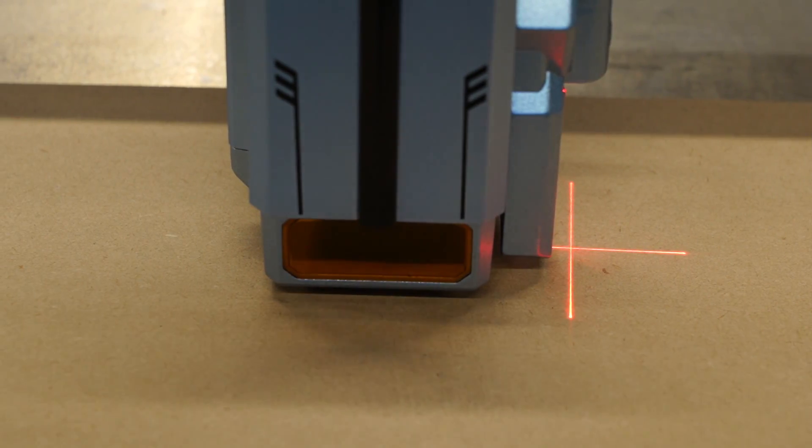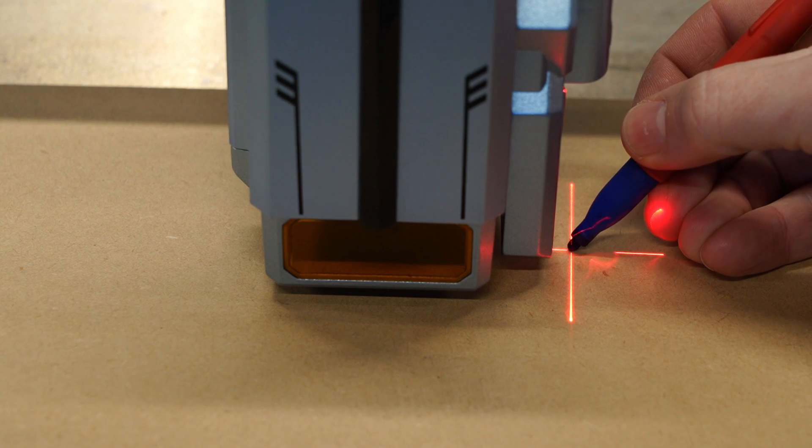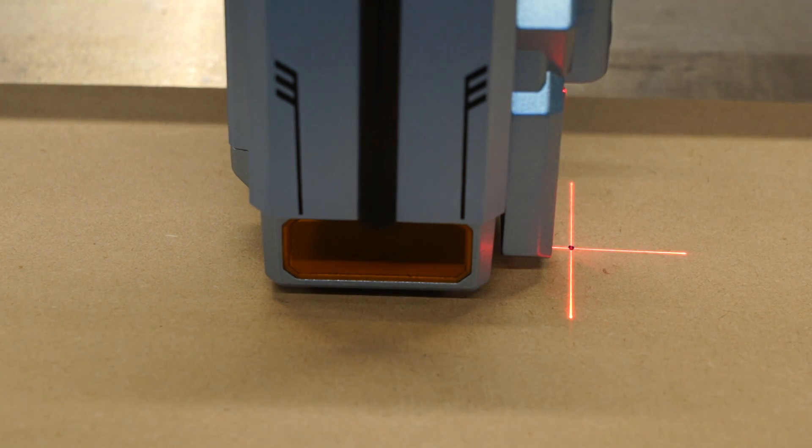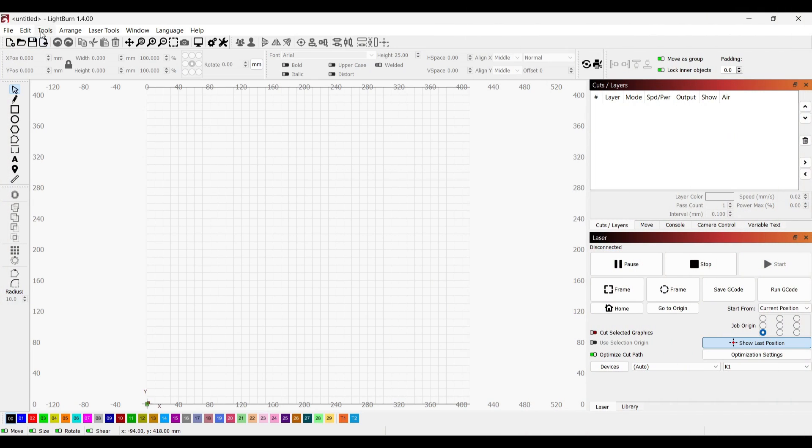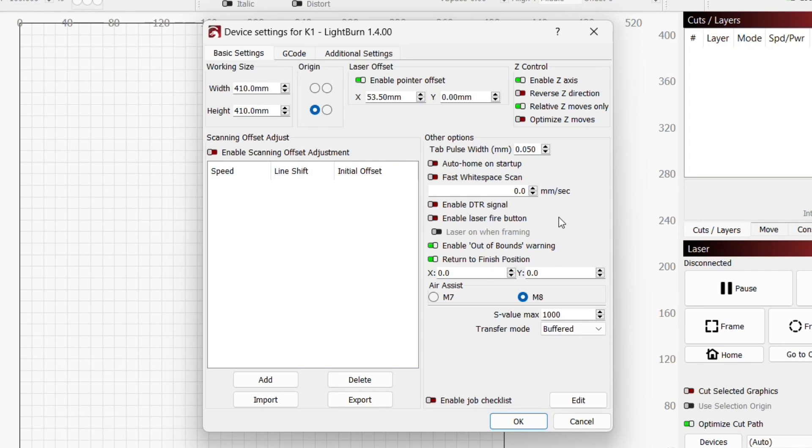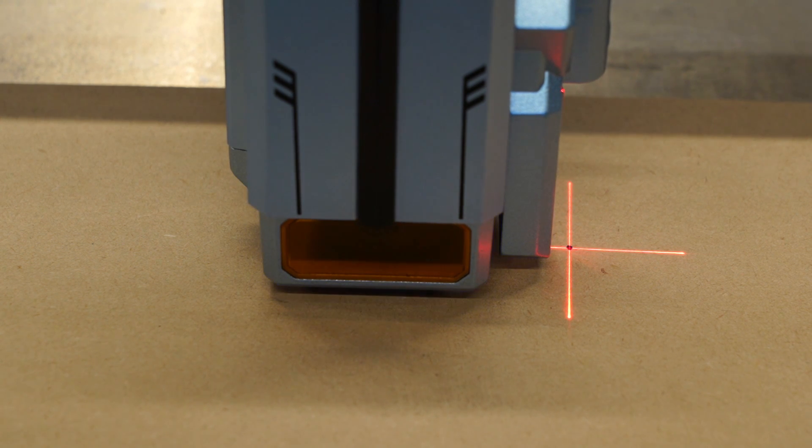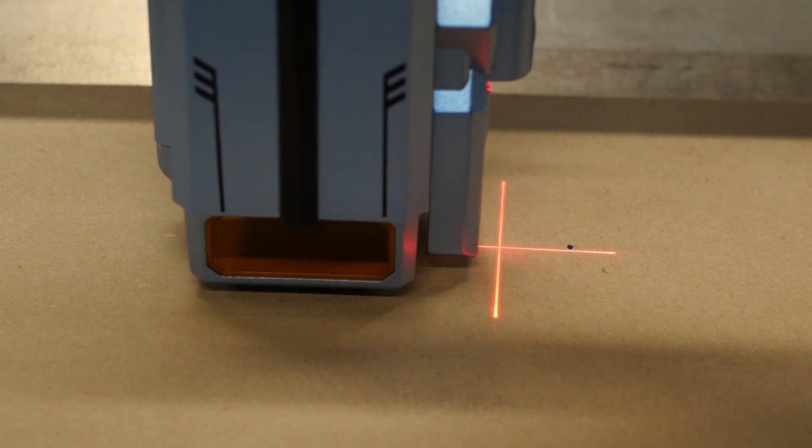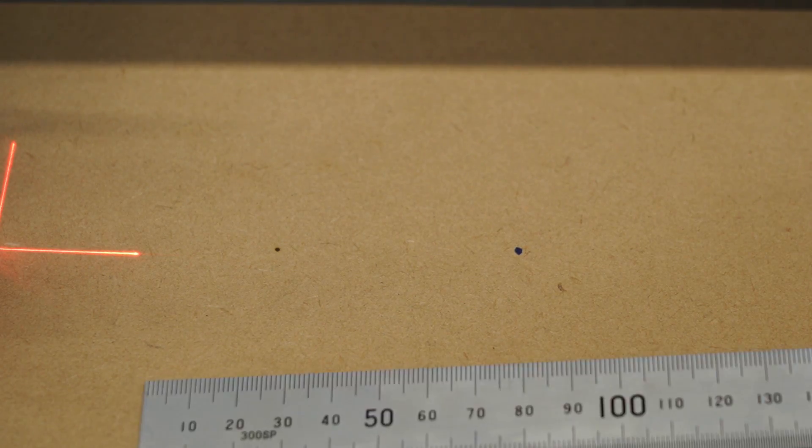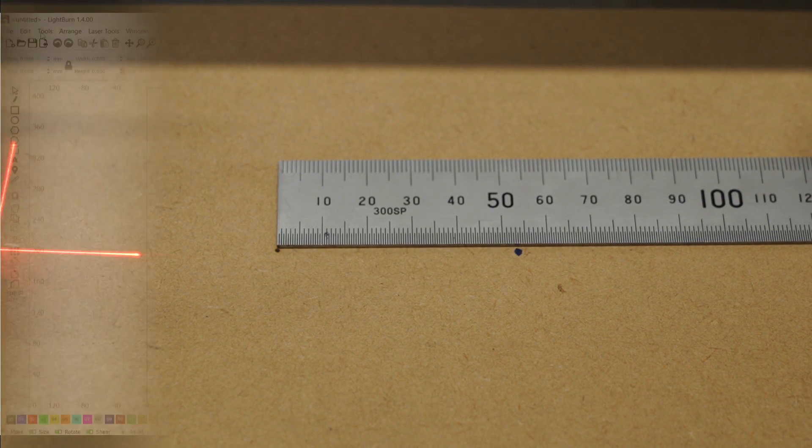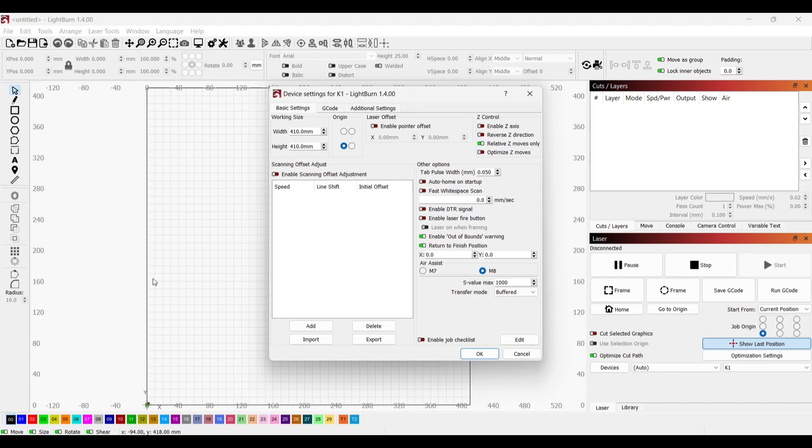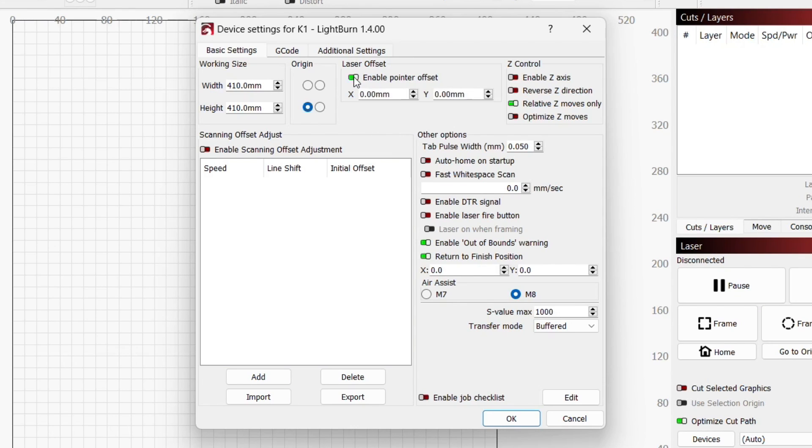Now I can move on to measuring the offset between the pointer crosshairs and laser. First I'll mark a dot where the crosshairs intersect. Back in Lightburn I'll go into device settings and turn on fire laser. This enables the option to manually fire the laser under the move tab. I set the laser at 7% power and flicked it on for a second to burn a dot into the wood. Now I can measure the distance between the two dots. Back in Lightburn I go into device settings and enable pointer offset and enter in my measurement.